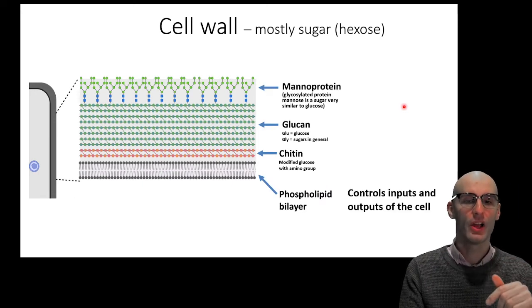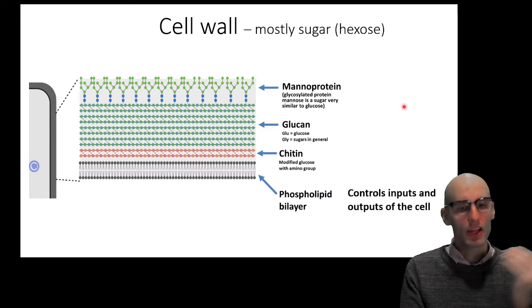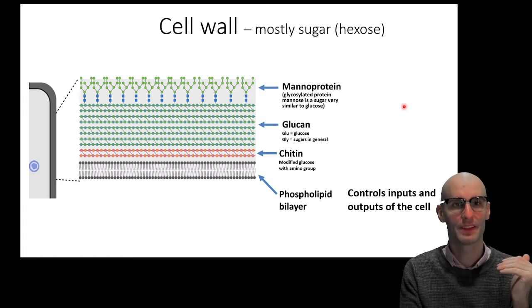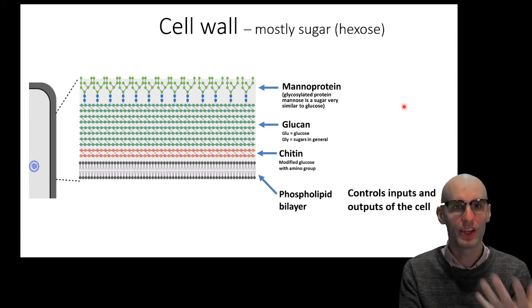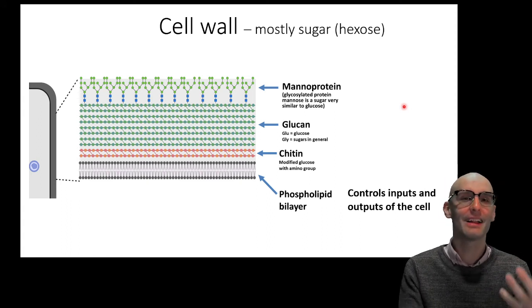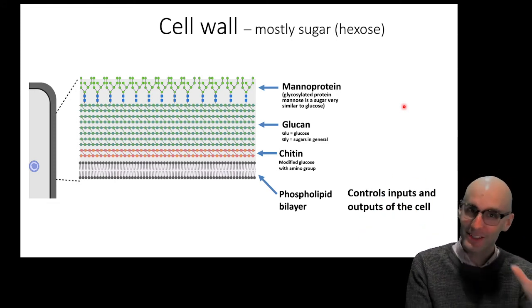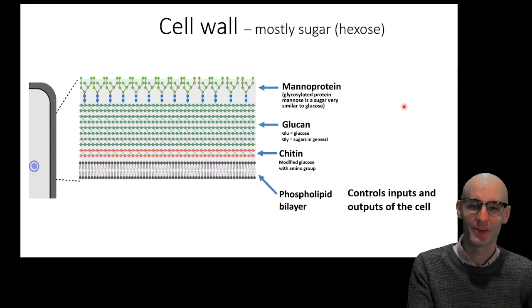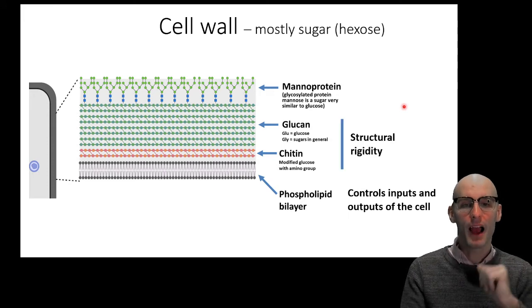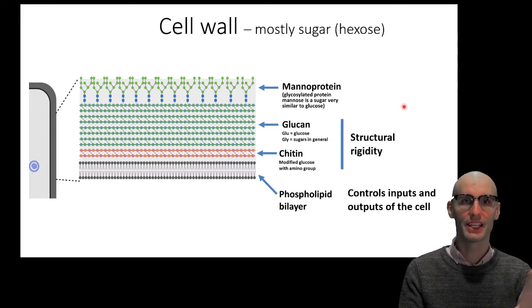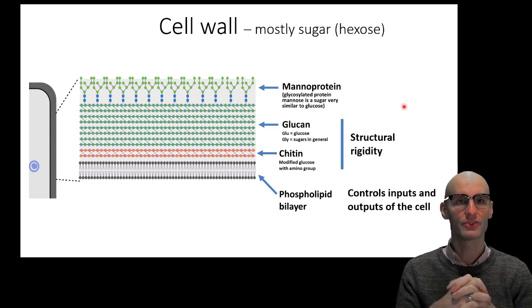Now let's jump into what those do. So phospholipid bilayers, they control the inputs and outputs of the cell. It allows the cell to create a unique environment inside of its cell and dictate what goes in and what goes out. That's the phospholipid bilayer. That's in all cells. That's the point of in all cells there.